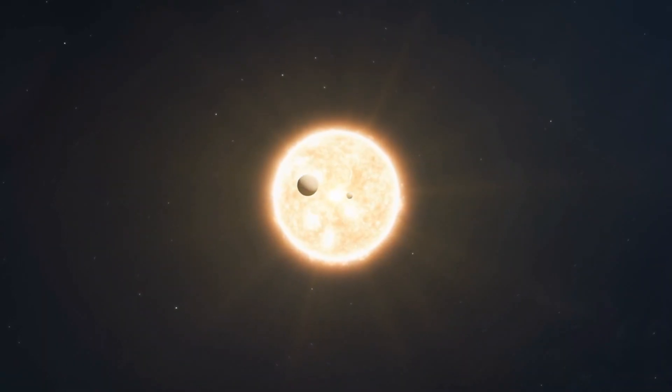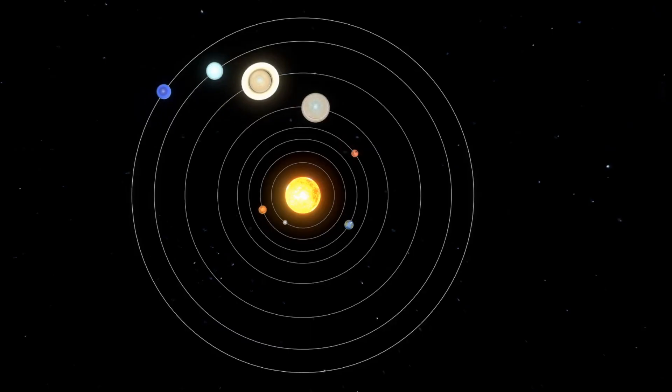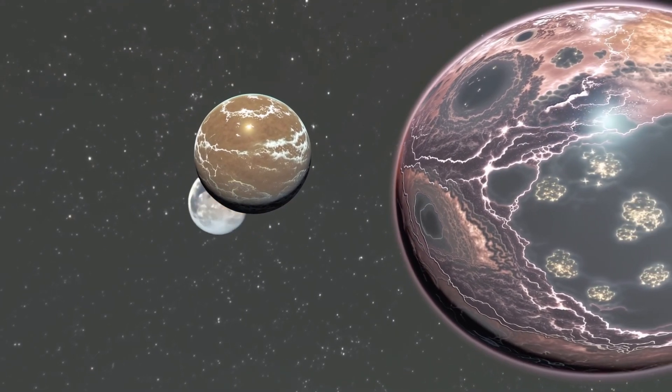Venus is one of the two planets in our solar system that doesn't have a moon. The other planet is Mercury. Being so close to the sun, the gravitational pull is so strong that it makes it difficult for any moons to remain in orbit.